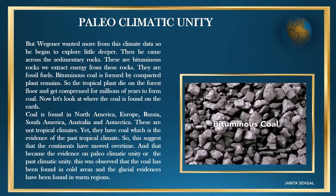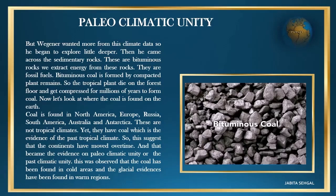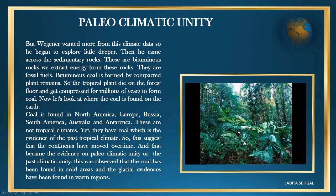Wegener wanted more from this climatic data, so he began to explore a little deeper and came across sedimentary rocks — bituminous rocks from which we extract energy. They are fossil fuels. Bituminous coal is formed by compacted plant remains; tropical plants die on the forest floor and get compressed for millions of years to form coal. Now let's look at where coal is found on Earth.